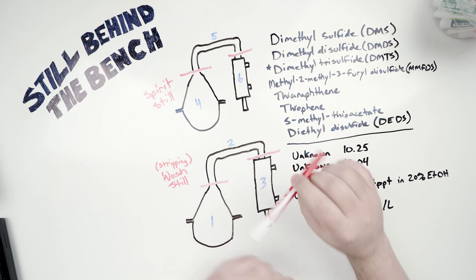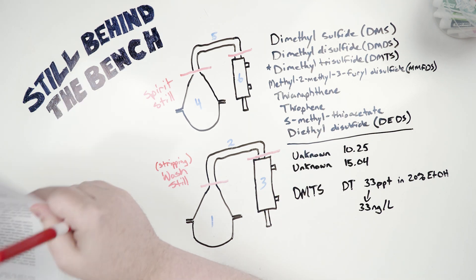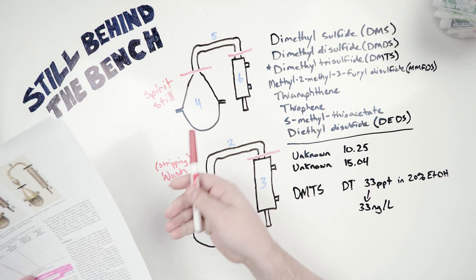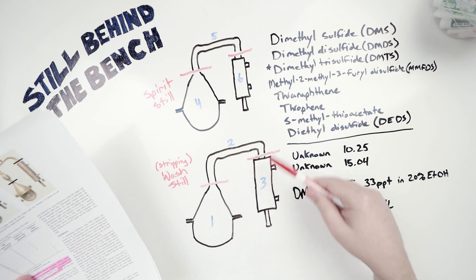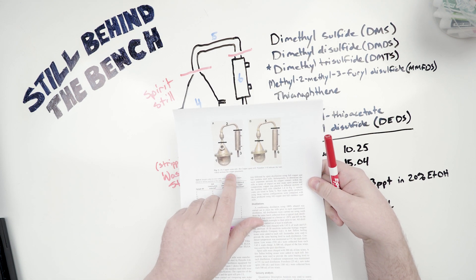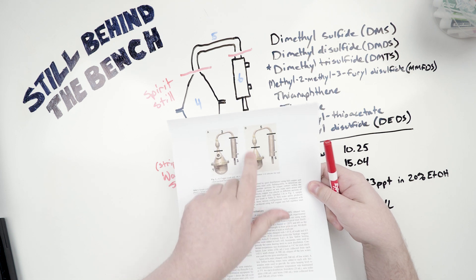So how did they do these tests? They had four three-piece stills made up. Each still was made of three pieces, a kettle or a boiler, a line arm, and then a condenser. So here's a photo of the copper still, the wash still, and then the spirit still.